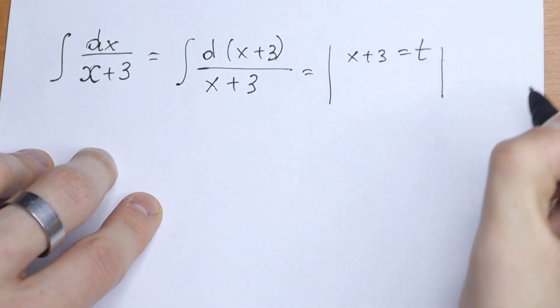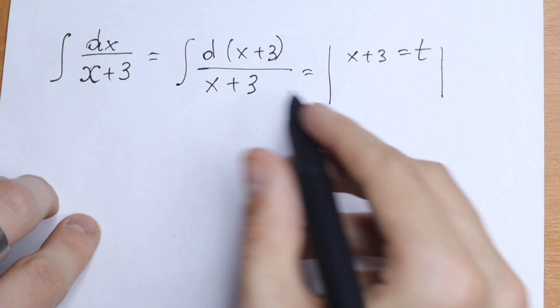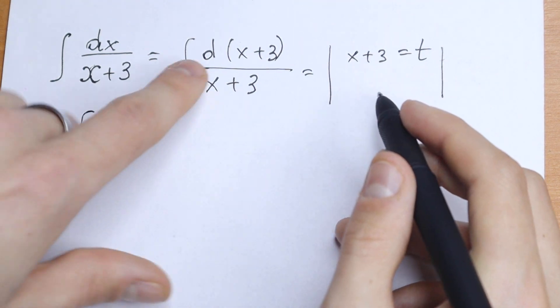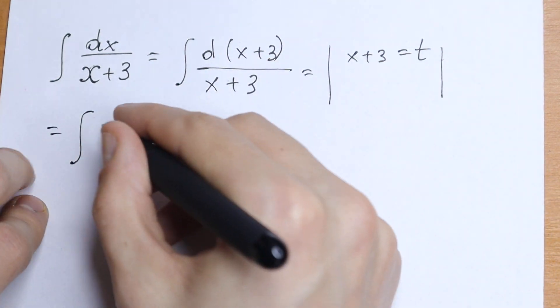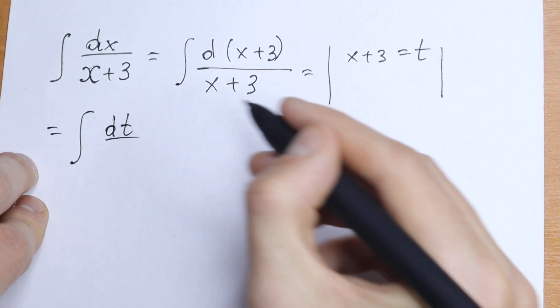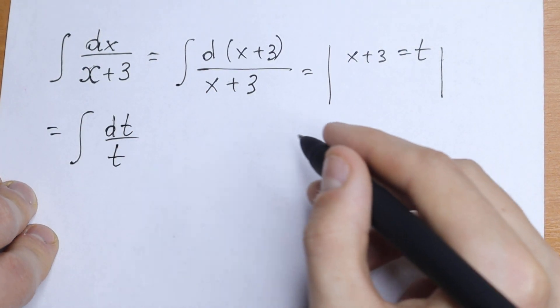As a result, we'll have an interesting integral. We'll have integral dt over t, with t in both the numerator and denominator.